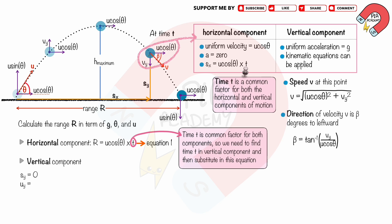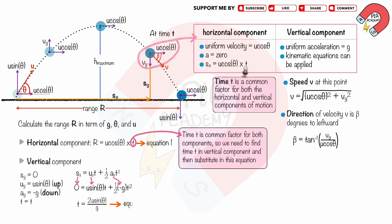Using the equation s equals ut plus half at squared, we substitute s equals zero, u equals u sinθ, and a equals negative g. Rearranging and simplifying gives us the time t — call this the second equation. Substituting the second equation into the first equation, and using the trigonometric identity 2 cosθ sinθ equals sin 2θ, we get the range r equals u² sin2θ divided by g.